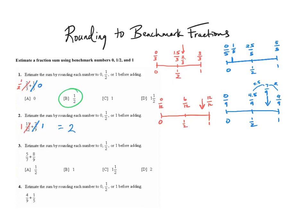In my third example, my first number line is going to be in sevenths: 0, 1 half, 1 whole. So 0 sevenths, and half of 7 is 3.5. I'm looking for 5 sevenths, which looks like it's going to be right about here. 5 sevenths is 2 away from 7 sevenths, and it is 1 and a half away from 3.5 sevenths. So it is closer to 3.5 sevenths, which means I'm going to mark that out and put 1 half.